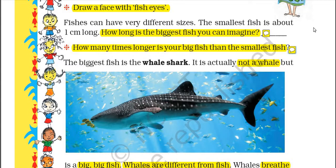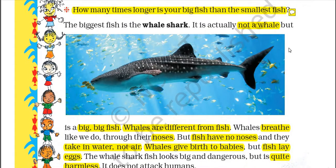The biggest fish is the whale shark — it is actually not a whale, but a very big fish. Its length is 18 meters. Can you imagine 18 meters? It is almost the length of 12 children like you standing one on top of another.